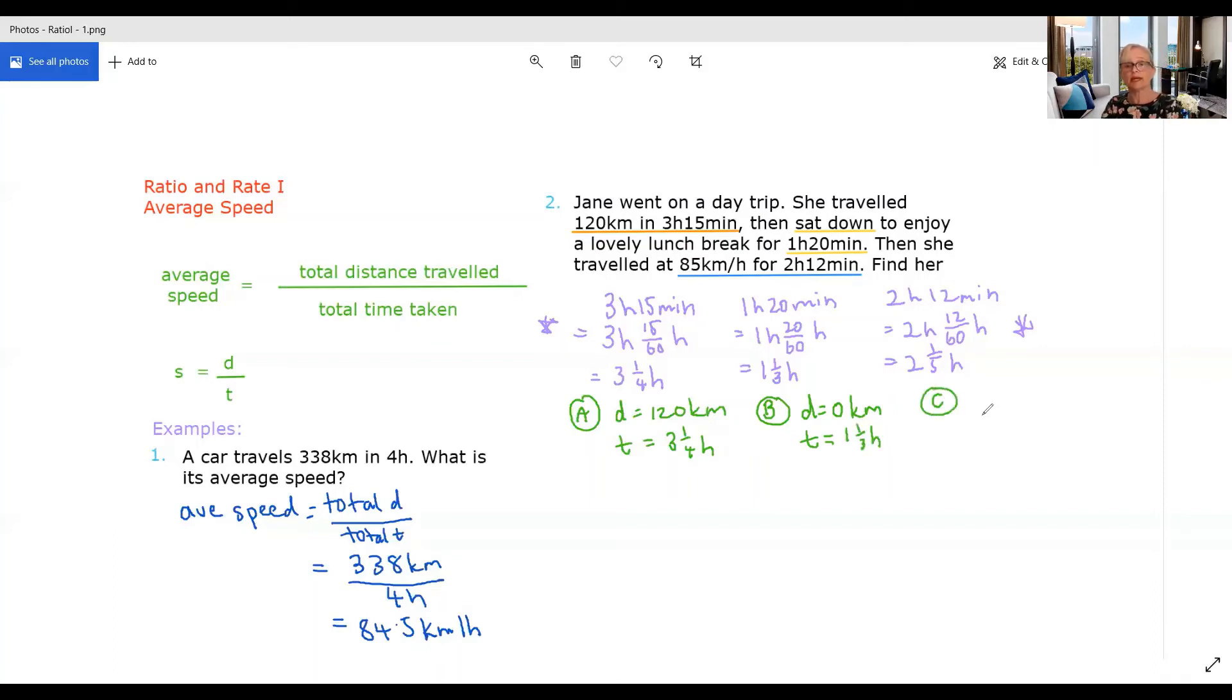Now for part C, we are going to have to do a little bit of a calculation. Here we know that the speed is 85 kilometres per hour and we know that the time was two and a fifth or 2.2 hours. So how far did she go? Well, if speed is distance over time, so our 85 is our d divided by our 2.2. So our distance, we're going to multiply our 85 by our 2.2. So we're going to get 85 times 2.2, which is 187 kilometres.